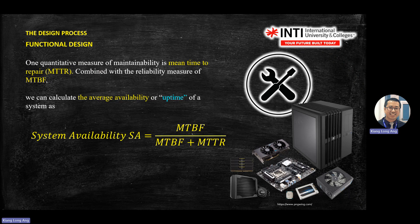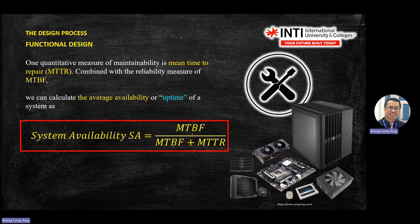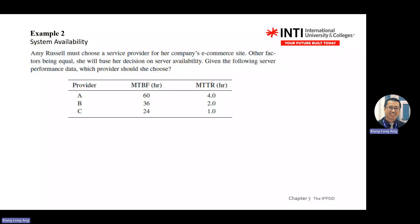Another concept is system availability (SA). The equation is MTBF divided by (MTBF plus MTTR). MTTR is mean time to repair. MTBF is one over the failure rate. So system availability equals MTBF divided by (MTBF plus MTTR). MTBF means how often something breaks down — for provider A, every 60 hours something breaks. MTTR means how long they can repair it, for example 4 hours.